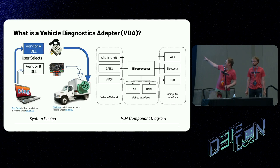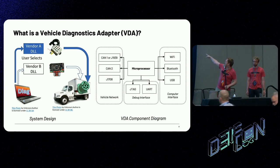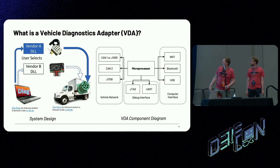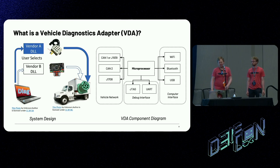You can see on the right a diagram of the VDA we looked at. On the right there's the computer interface — USB, Bluetooth, and Wi-Fi are how you connect directly to the VDA. The microprocessor then connects to the vehicle network, usually over J1939 unless it's really old.